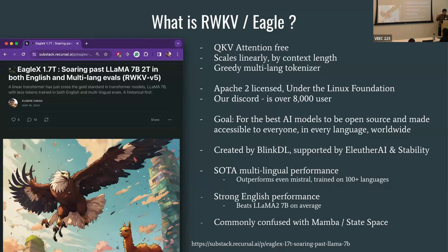This was created by BlinkDL and supported by EleutherAI and StabilityAI. We are currently at 7B parameter state-of-the-art in multilingual performance. One of my gripes about that SOTA performance is that we can only test on 23 languages and each language has only one or two evals at best — I don't think that's a good way to measure multilingual performance. We have strong English performance and beat Llama 2 7B on average. We are very commonly confused with Mamba and state space models — here's a hint: Eagles eat Mambas.